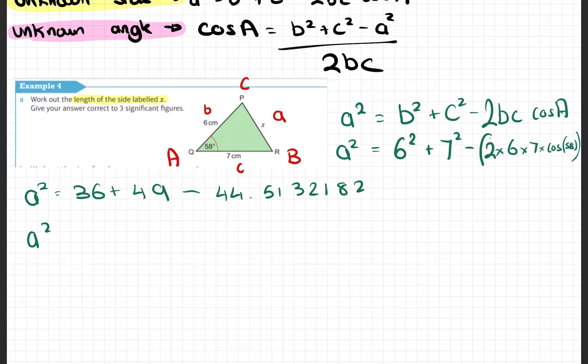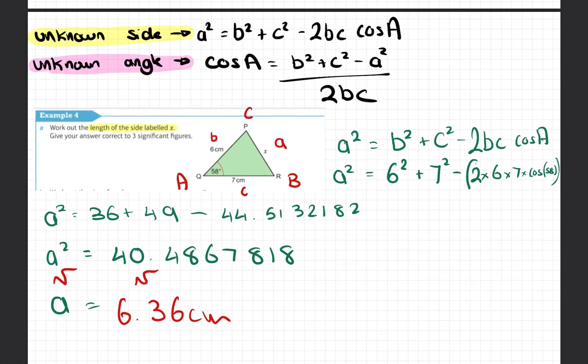A squared equals 40.4867818. Therefore a is the square root of that answer. On your calculator you can just go square root of your last answer. To one decimal place, the missing length is 6.36 centimeters.